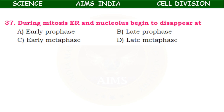During mitosis, endoplasmic reticulum and nucleolus begin to disappear at which stage — early prophase, late prophase, early metaphase, or late metaphase? In early prophase, nucleolus and nuclear membrane start disappearing. By the end of late prophase, the endoplasmic reticulum and nucleolus disappear.